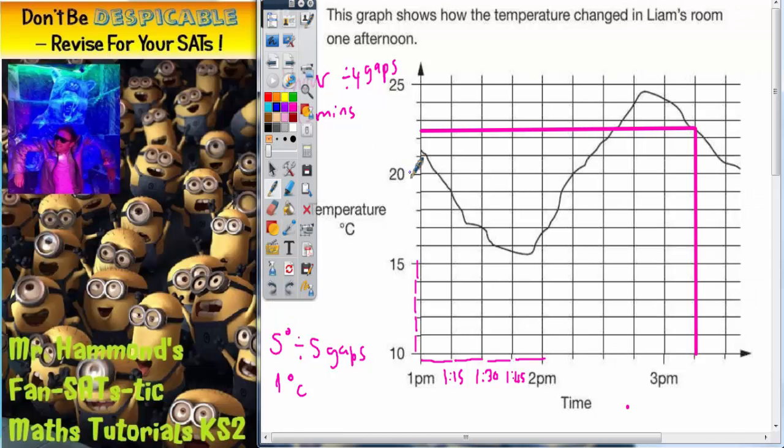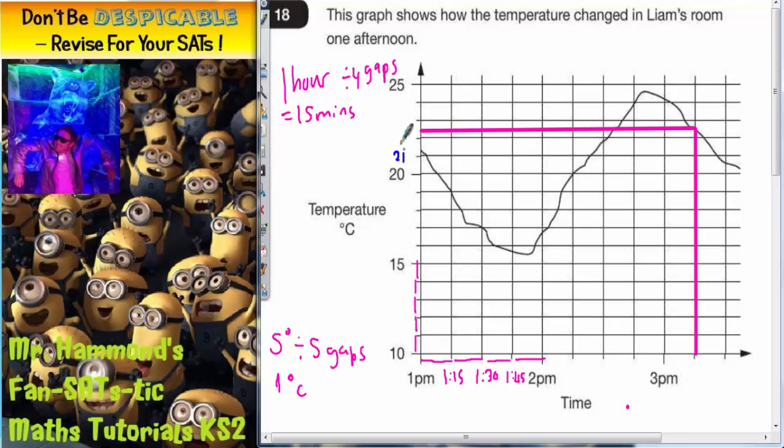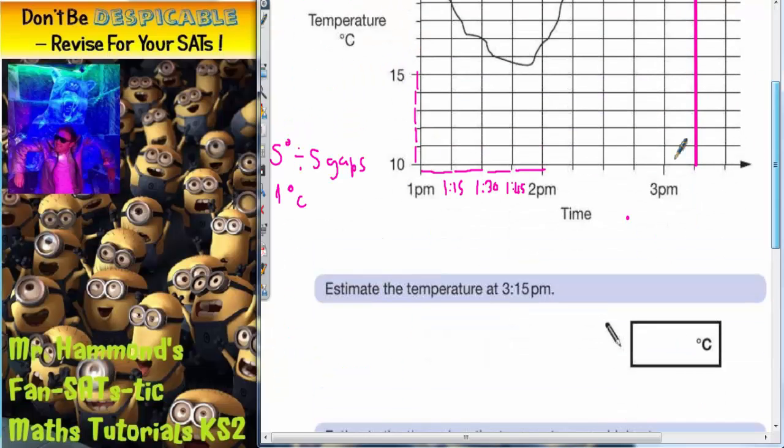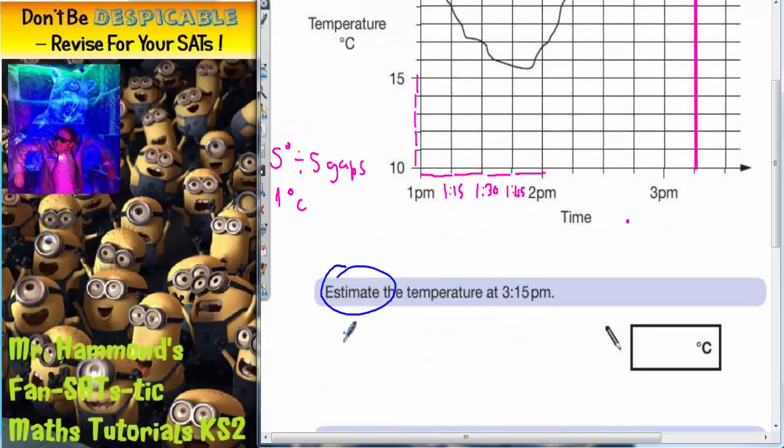And then we need to draw another line straight across from the graph. Straight up from 3:15 p.m. and straight across, and we need to know what this number is here. So if this is 20, this will be 21, 22, 23, 24. So you can see it's between 22 and 23. So that's going to be 22.5. It does say estimate, and I've seen my answer is 22.5, but because it's an estimate, they'll probably accept any answer from 22 to 23.